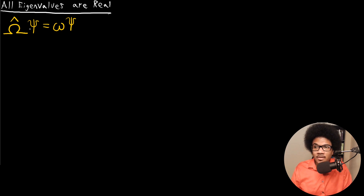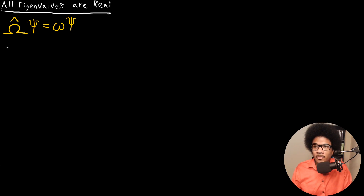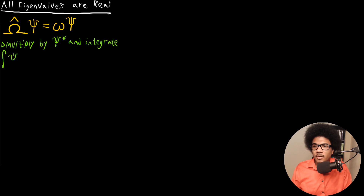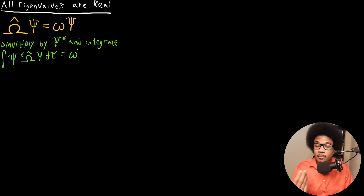First, what we want to do is take the eigenvalue equation and multiply by the complex conjugate of the wave function and integrate on both sides. So we're going to have this on the left-hand side, integrating over all space, d tau. And on the right-hand side, since omega is just a scalar — just a number — we can pull it out of the integral and then we just integrate the wave function.